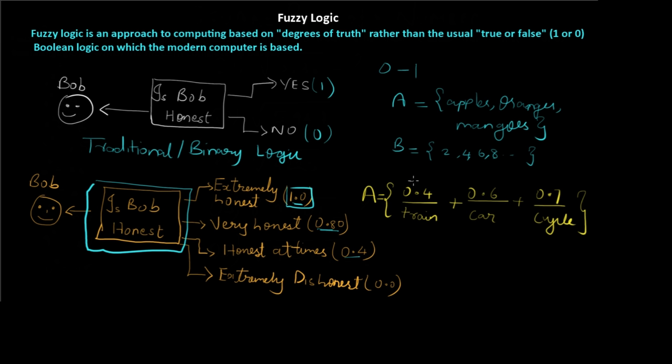This numerator, it is not actually a numerator, but this upper value is known as the membership degree, the degree to which this lower value is associated with this set. We can say that train has a degree of membership of 0.4 with this set. Car has a membership degree of 0.6 associated with set A.